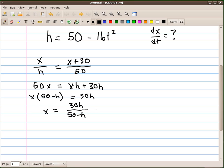So, I'm going to go ahead and substitute 50 minus 16t squared where h is. And when I do that, I get 30 times 50 minus 16t squared over 50 minus 50 minus 16t squared.